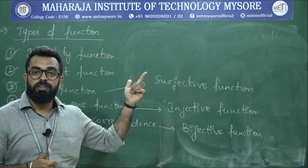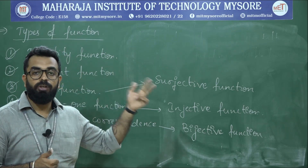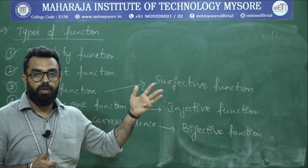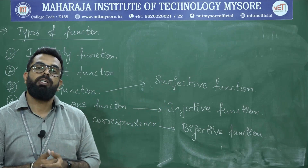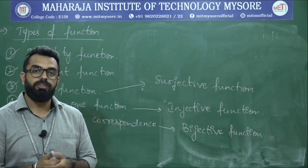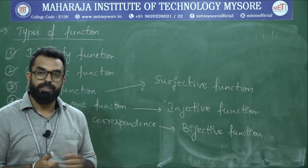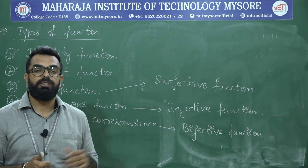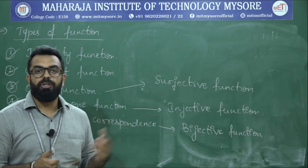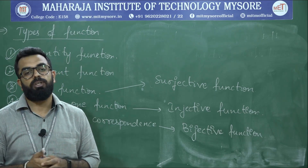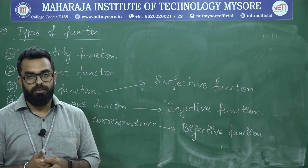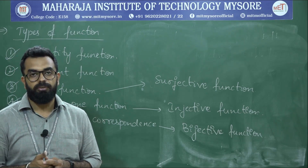So we have five types of functions: identity function, constant function, onto function, one-to-one function, and one-to-one correspondence. In the next session, we shall solve problems on these types to gain more clarity. Thank you.